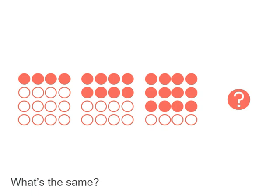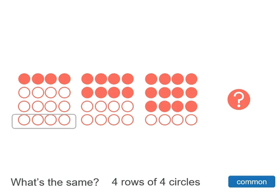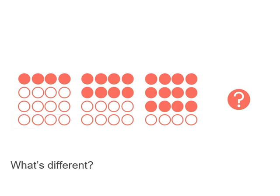Let's think about what's the same between each group of circles. Each group has 4 rows of 4 circles. So that's common among them all. 4 rows of 4 circles. But what's different?